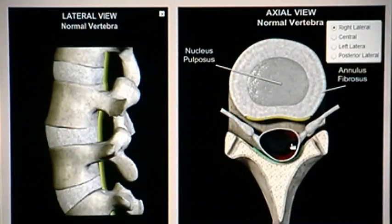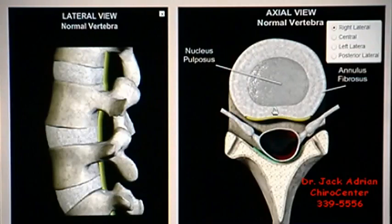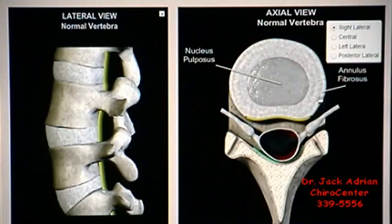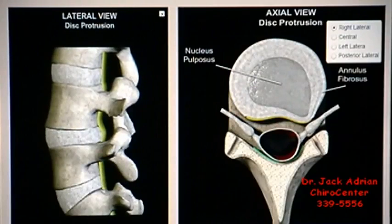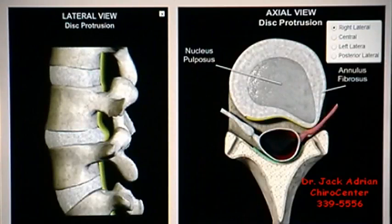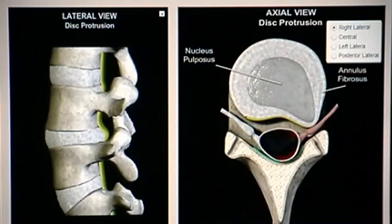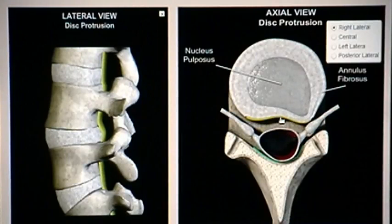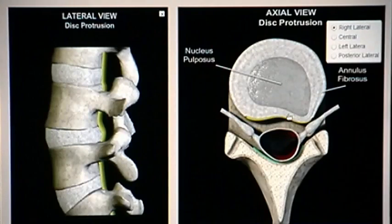Disc bulges, also known as disc protrusions, occur when the outer wall of the disc — the annulus — weakens through various causes and begins tearing. When it tears, the pressurized fluid, the nucleus inside, seeks the path of least resistance outside, much like a stream finds a path of least resistance as it runs down a hill. With the torn area being the weakest, the pressure from the inside forms a bulge on that part of the disc — much like a weak spot on the rubber of an inner tube will form a bubble.